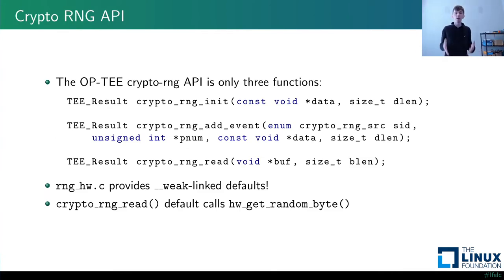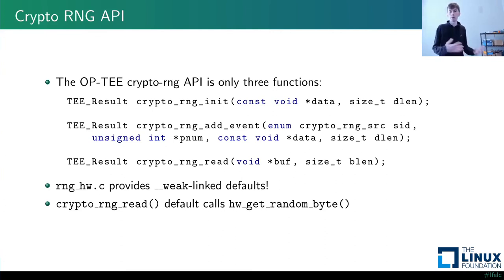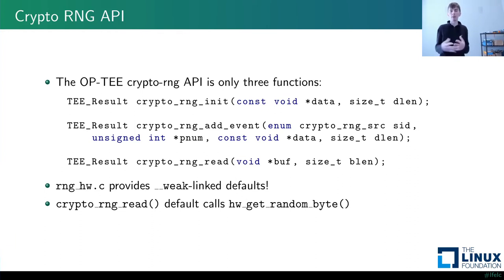Our basic plan for the hardware random number generator driver: first, understand OPTI's CryptoRNG API; then implement a driver satisfying this API; then integrate it into our build. The CryptoRNG API has only three functions. CryptoRNG_init initializes state vectors or configures hardware, receiving a seed argument — relevant only for pseudo-random software generators, which are seeded. Since our hardware generator is not seeded, we can safely ignore that argument.